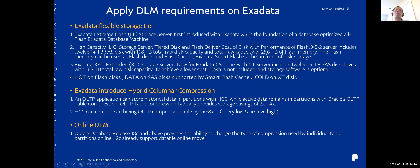Next is the High Capacity storage server, which is a combination of HDD hard disk and flash memory disk. A single server includes 12 to 14 terabyte SAS disks, with total 168 terabyte hard disk capacity. It also has 25 terabyte flash memory capacity, which can be used as flash disk or as flash cache in front of the disk storage. We can create a data disk group based on this HDD storage server.